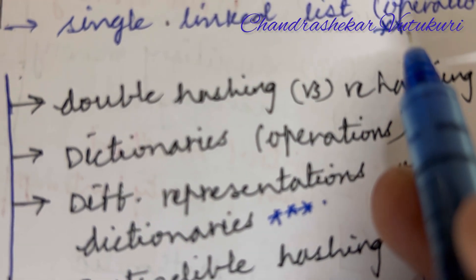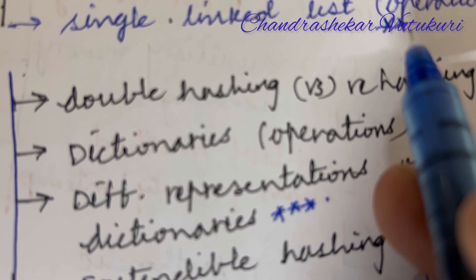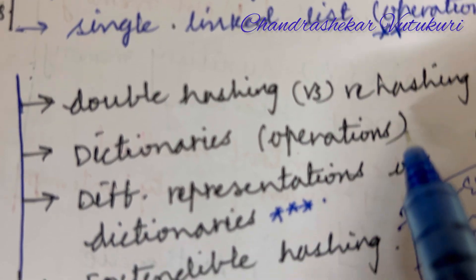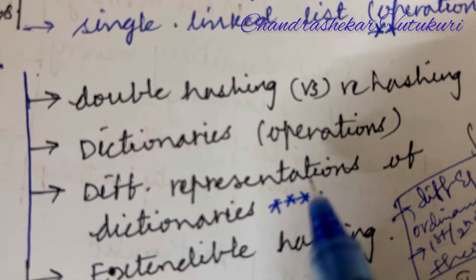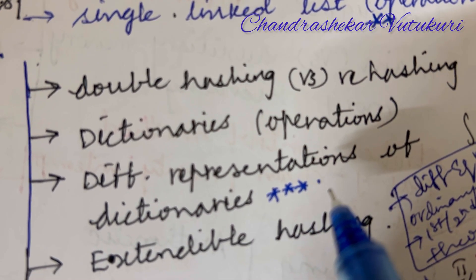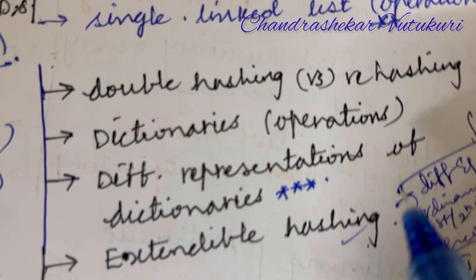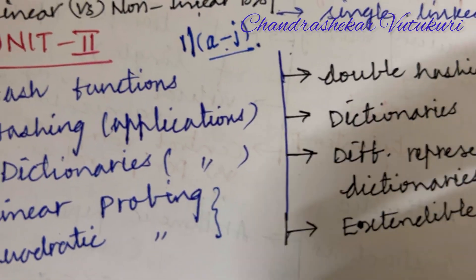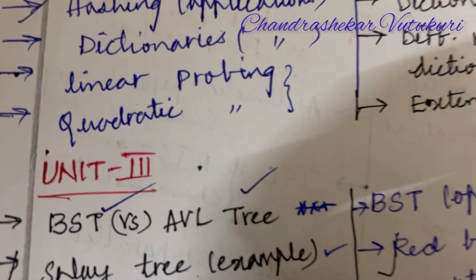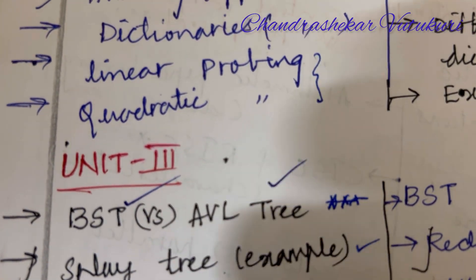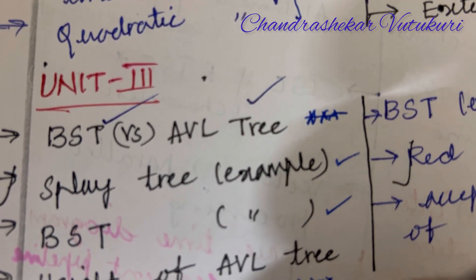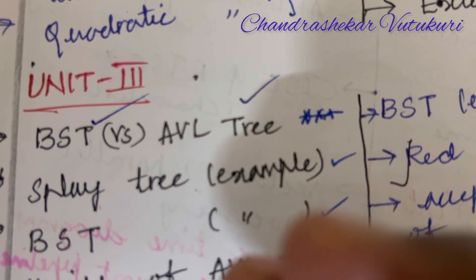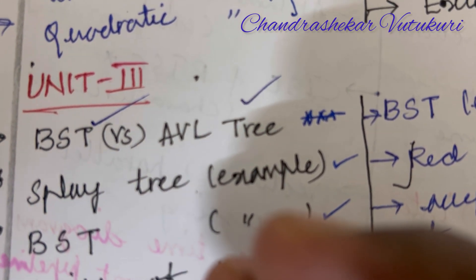Also important for Unit 2: double hashing versus rehashing, dictionaries and their operations, different representations of dictionaries, and extendable hashing. From every unit you'll get 2-mark short questions and a 10-mark long question, totaling 12 marks. Be thorough with each and every concept you read and do not skip any part of the video.